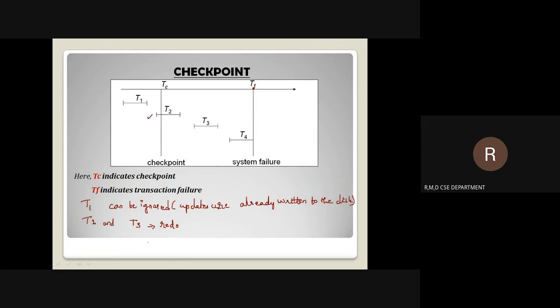What about T4? During the execution of T4, T4 is not yet completed — while T4 was partially executing, the system failed. So what we have to do during transaction failure is undo the operations of T4. That is, undo all the changes made by transaction T4 on the database items. This is how checkpoints are used in transaction recovery.